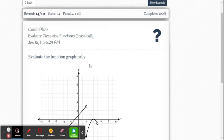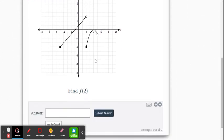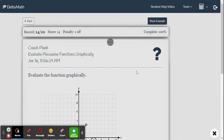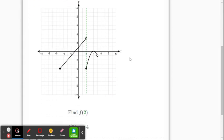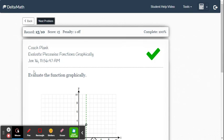And we'll do one more. This one says find f of 2. So again, the input value is 2. Be careful. The open point's not included, so it's going to be that solid point. So the y value is negative 4 for that solid point. So we put negative 4. Submit our answer. And that's how we evaluate a function from the graph.